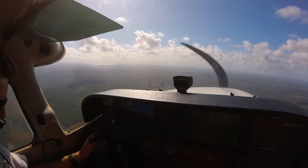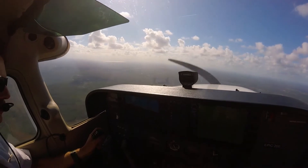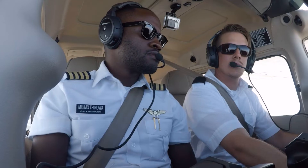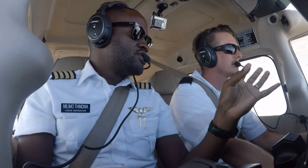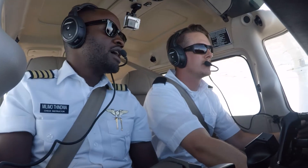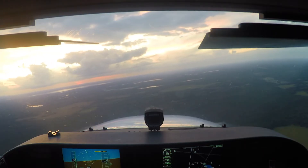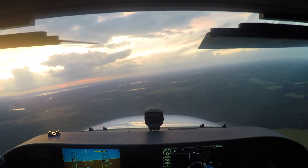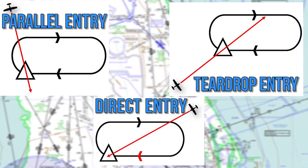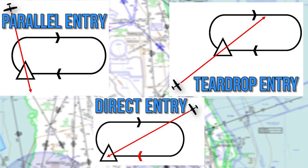Once a pilot receives a holding clearance, they need to determine the most appropriate entry to the hold based on their location to the fix and clearance. Student pilots often struggle with determining the best entry. One of the best ways to fix this issue is to better identify circumstances that dictate the hold entry. Here are ways to quickly recognize the best hold entry procedure by examining the parts of the hold and the airplane's direction of flight to the fix.